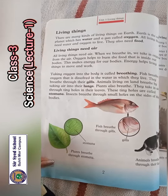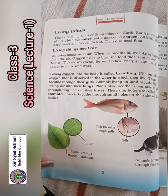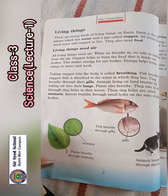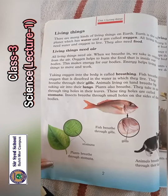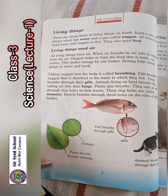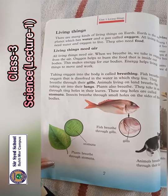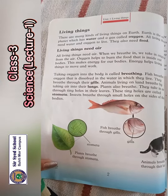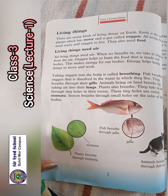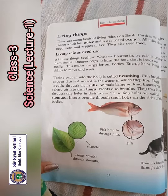Animals that live on land breathe by taking air into their lungs. Plants also breathe — they take in air through tiny holes in their leaves. These tiny holes are called stomata. Insects breathe through small holes on the sides of their bodies.